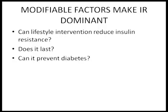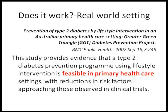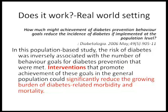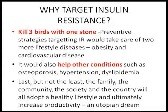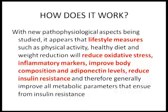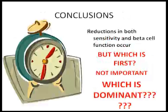Here we have lifestyle intervention. Does it last? Can it prevent diabetes? All of us know there are enough clinical trials showing that yes, it works. And it works even in the real-world primary healthcare setting — studies show these interventions significantly reduce the growing burden of diabetes. There is evidence for long-term efficacy of lifestyle intervention to reduce insulin resistance and insulin resistance syndrome. And why do you target insulin resistance? Because you are killing three birds with one stone — you are taking care of obesity, cardiac disease, and other conditions as well.